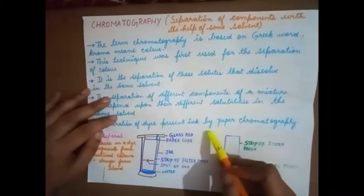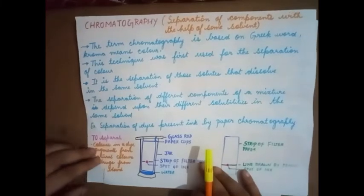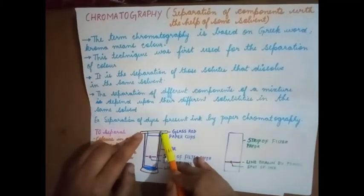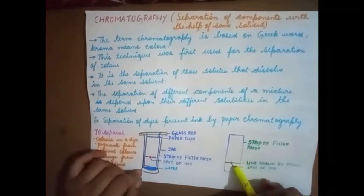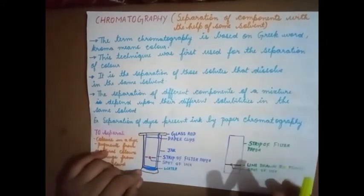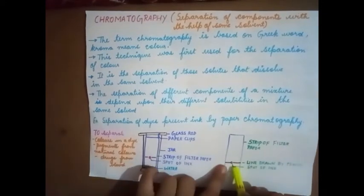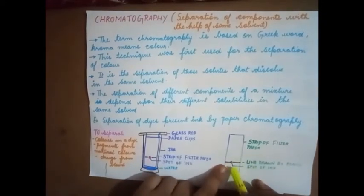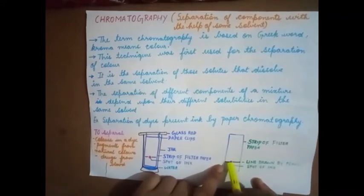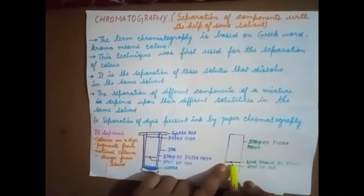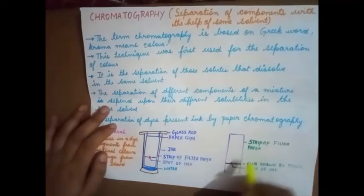Separation of dyes present in ink by paper chromatography. For this experiment we need a chromatographic jar, a filter paper, and a dye that has to be separated. We are placing just a spot of the dye on the filter paper.